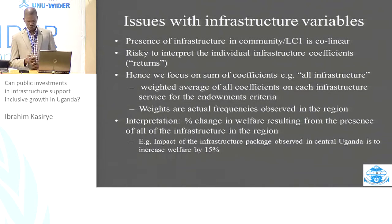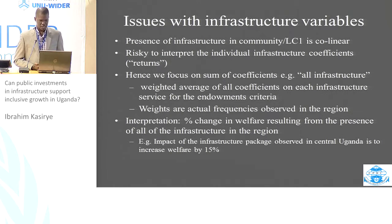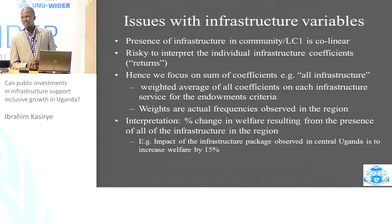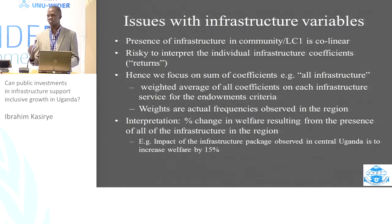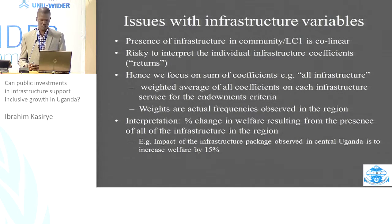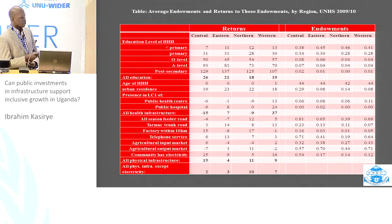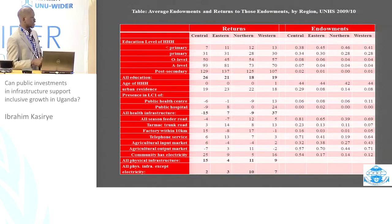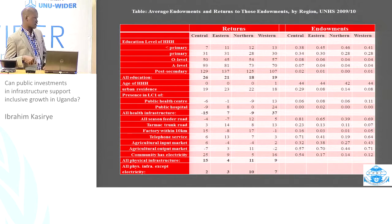There are a number of issues to note. The presence of infrastructure in a community is highly collinear — communities that have health facilities are more likely to have electricity, and they're more likely to have better roads. This drives some of our results. It is very risky to interpret individual coefficients as returns because of such collinearity. So in the estimations we focus more on explaining what we call all health infrastructure, all physical infrastructure, or all physical infrastructure and health combined, because of such collinearity issues.